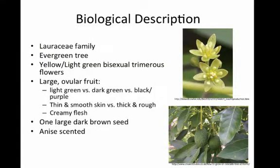The avocado, an evergreen tree, is part of the Lauraceae family, which is usually characterized by its large waxy leaves. The flowers of the avocado are light yellow or green bisexual trimaris flowers. The fruit of the avocado has a very wide range of appearance due to these many varieties, but the color ranges between light to dark green or dark purple to black. The skin can be thin and smooth or thick and bumpy.